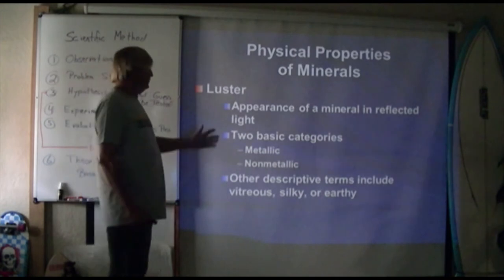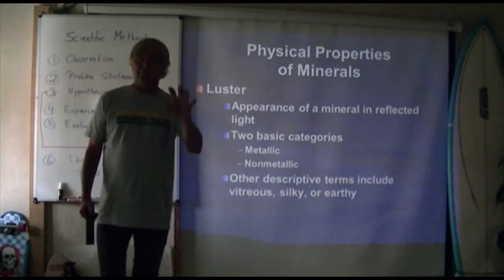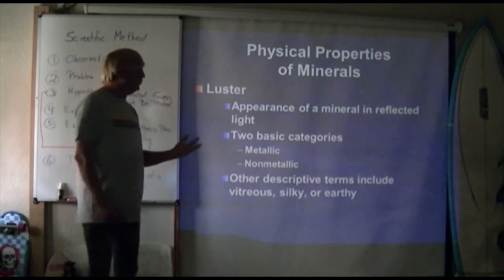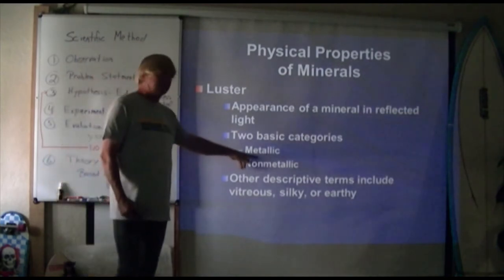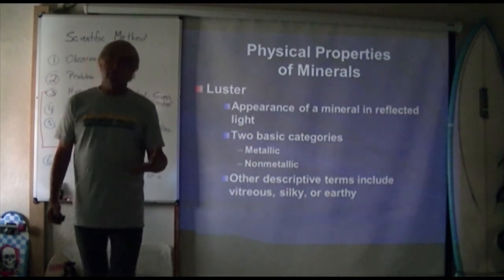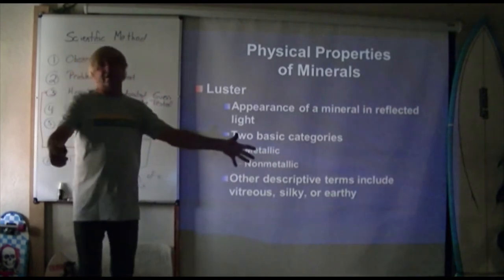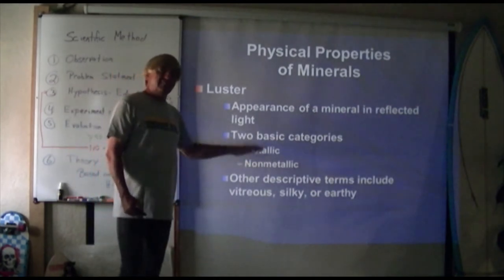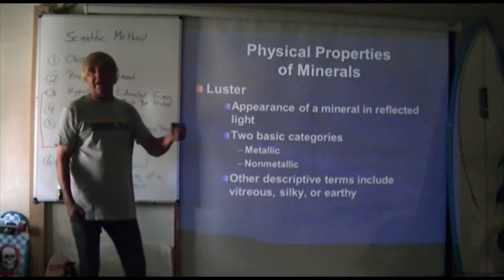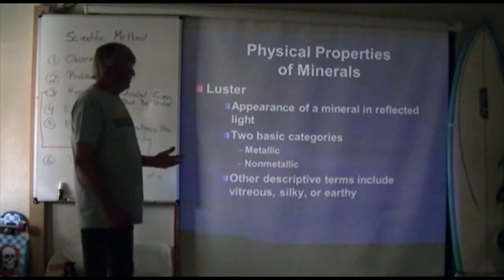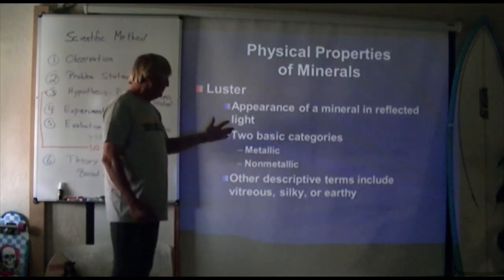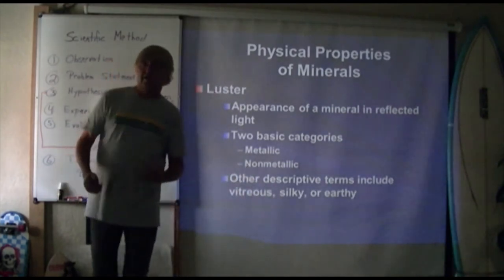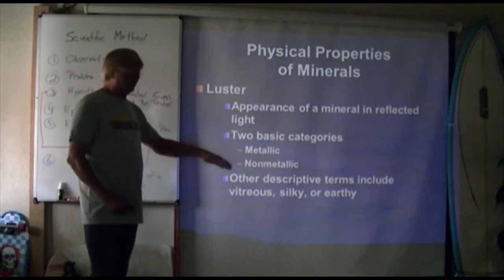Luster has to do with the appearance of a mineral in reflected light — is it dull, vitreous (shiny), earthy, or metallic? Metallic would be something like coins — dimes, quarters, nickels. Old cars with chrome bumpers are a great example of metallic. But metallic does not have to be shiny — a frying pan is iron and is metallic but not shiny. We look at whether a mineral is metallic or non-metallic, whether it's vitreous, silky, or earthy. These are diagnostic features that tell us something about the environment where the mineral was formed.